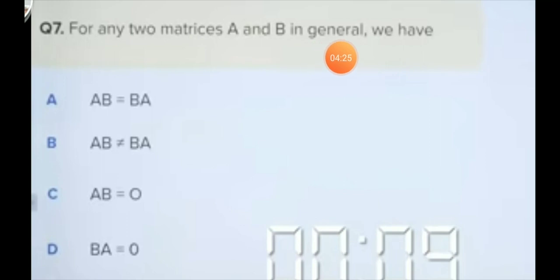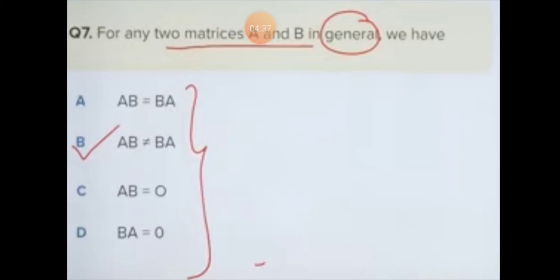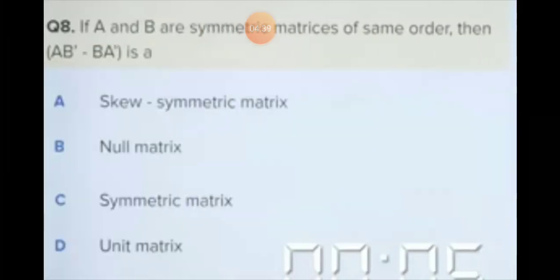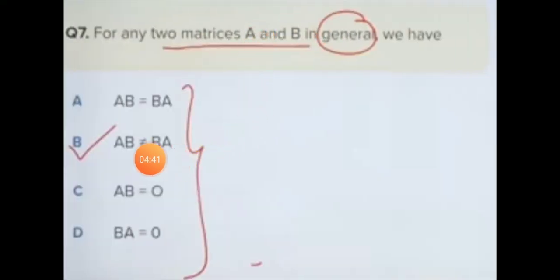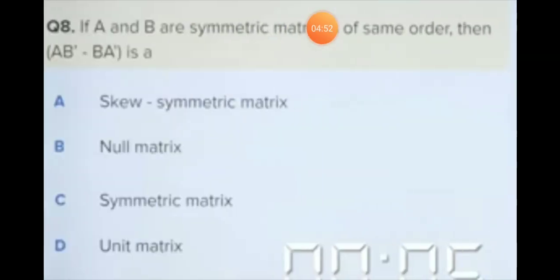Remember, if A and B are two general matrices, then AB is not equal to BA. Generally, AB equals BA, or AB equals zero does not imply A or B is zero. In this way, there is a problem: if A and B are symmetric matrices of the same order, what can we say about their product?